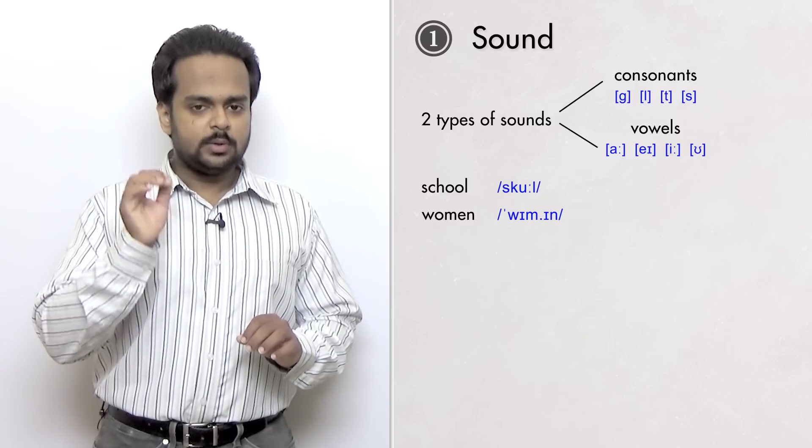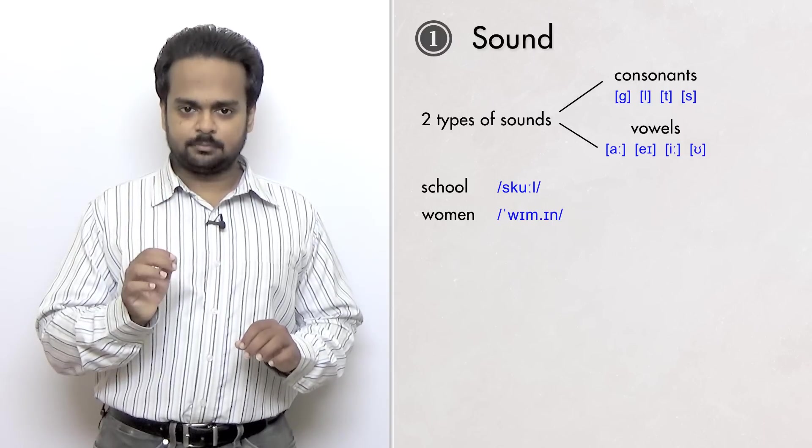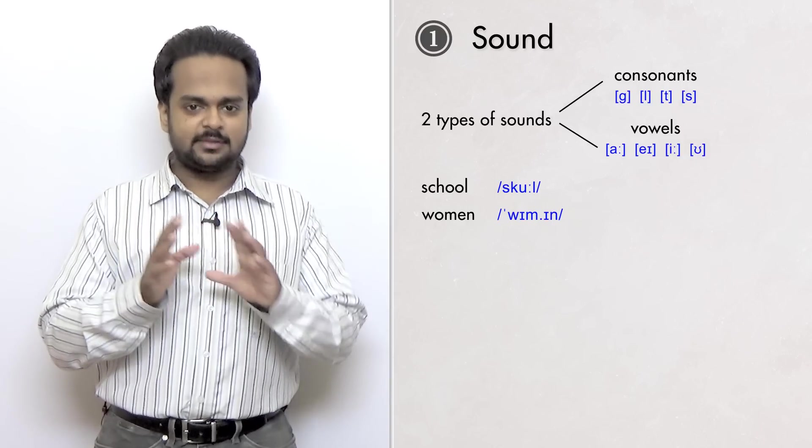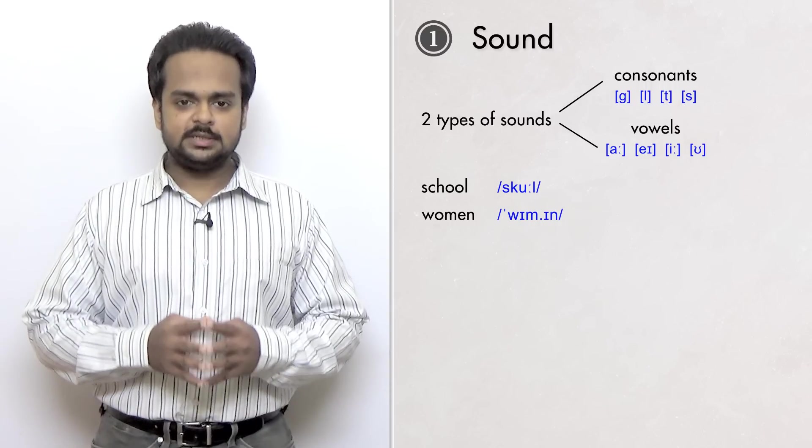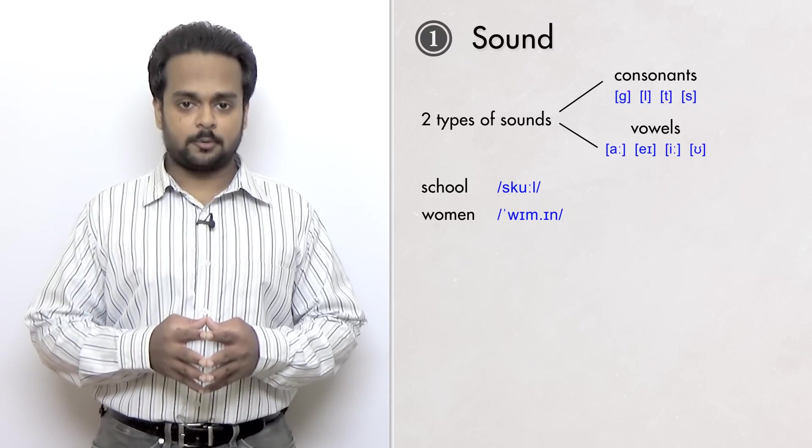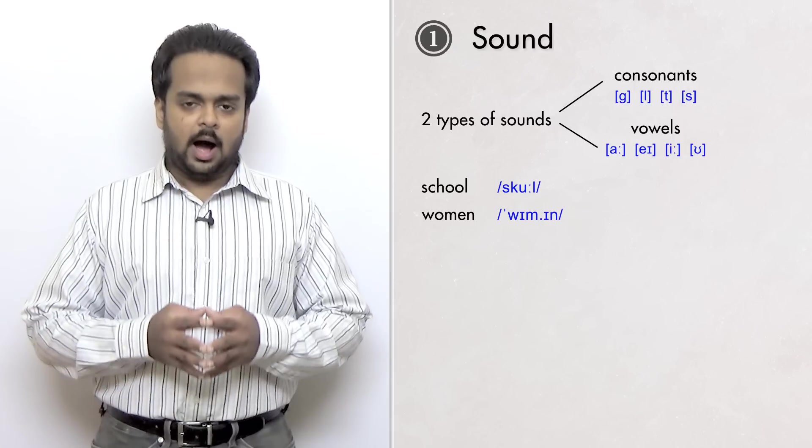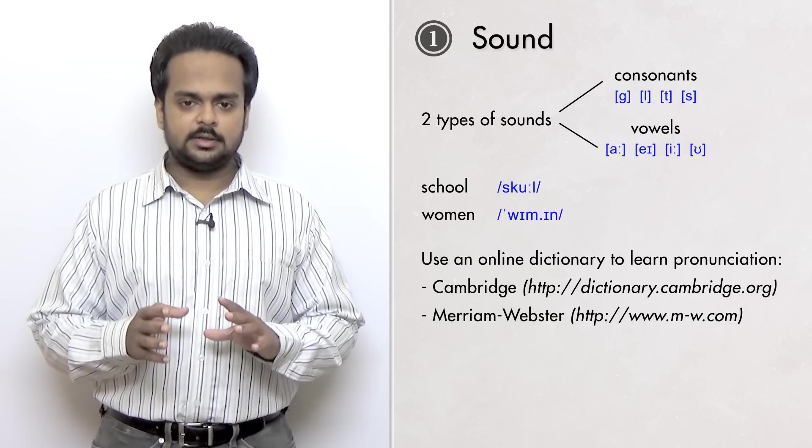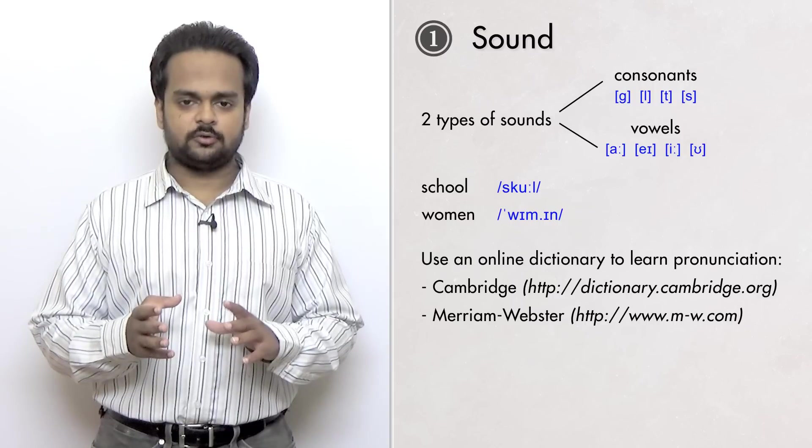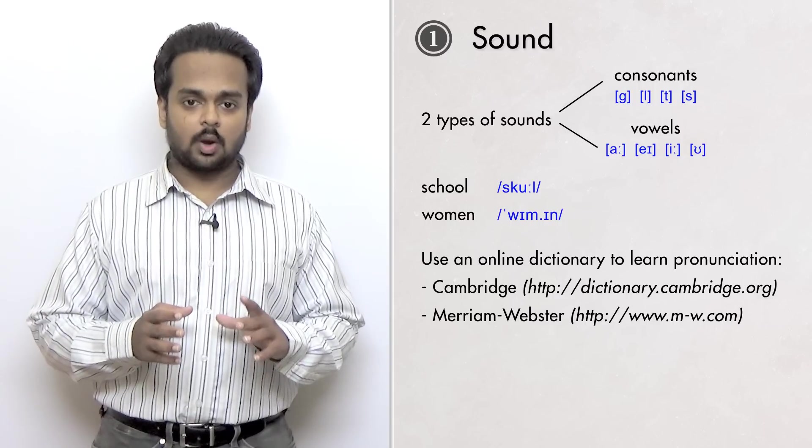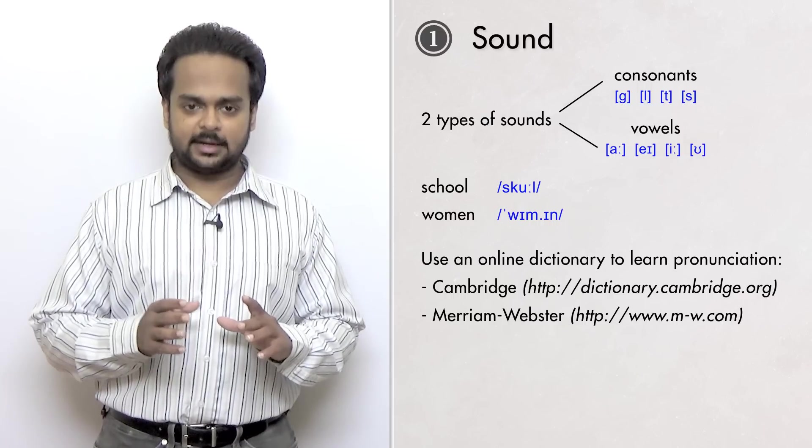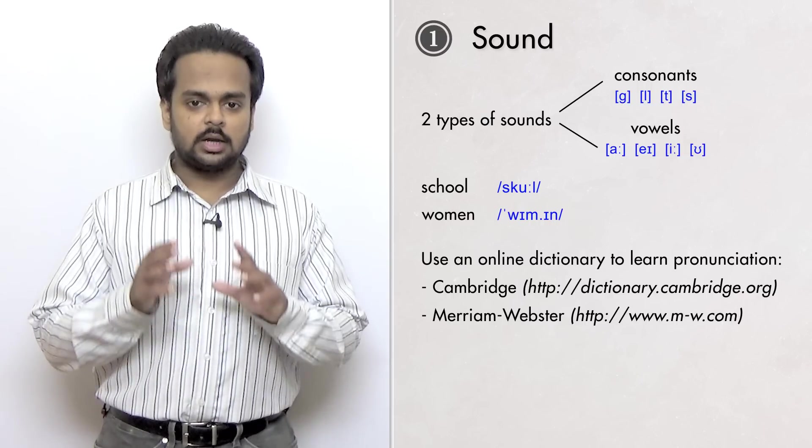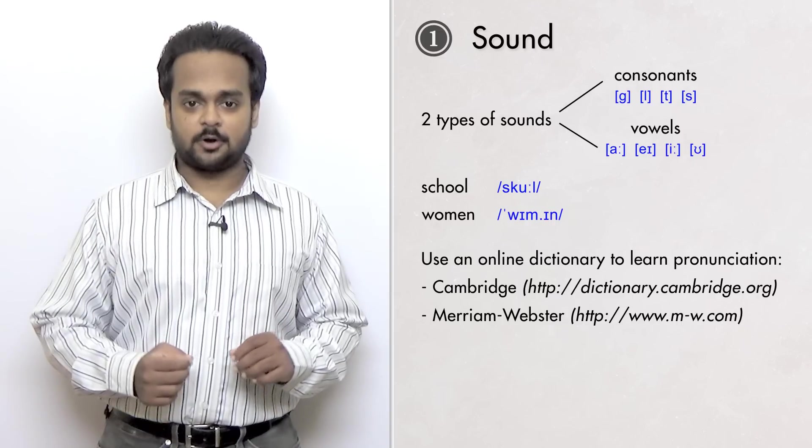Whenever you say a word, you need to get the sounds right. If you try to simply read the spelling, you might go wrong. So you must use a dictionary to learn the correct pronunciation of words. I suggest that you use an online dictionary like Cambridge, Oxford, or Merriam-Webster because that way, when you search for a word, you can see the pronunciation in phonetic symbols and you can also click a button to hear the correct pronunciation.